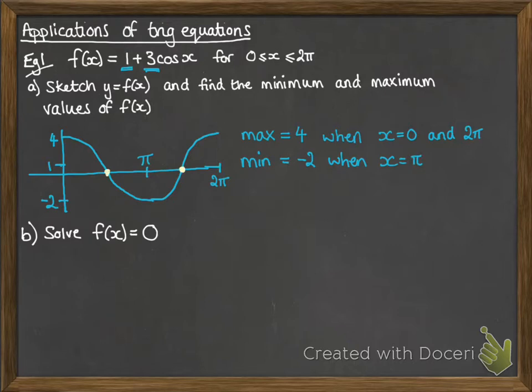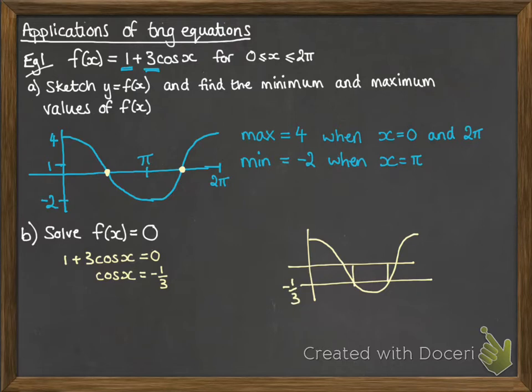Now solving for f of x equals 0 means we're looking for these points where it crosses the x-axis. So we can set our equation equal to 0 and solve from there. Now we're looking for cos x equals minus 1 third, so do a little sketch of that. We're looking for those values that give us minus 1 third. On your calculator, make sure you're set to radians, because our range is looking for 0 to 2 pi. We do inverse cos of minus 1 third, we get 1.91. Then using the symmetry of the graph, we can get our second solution of 4.37.